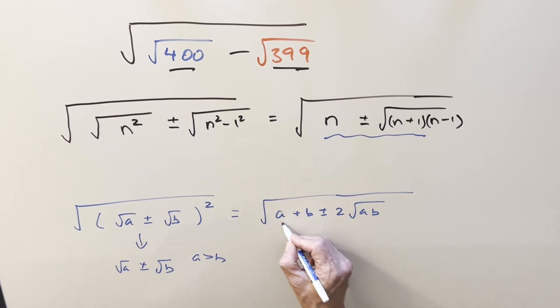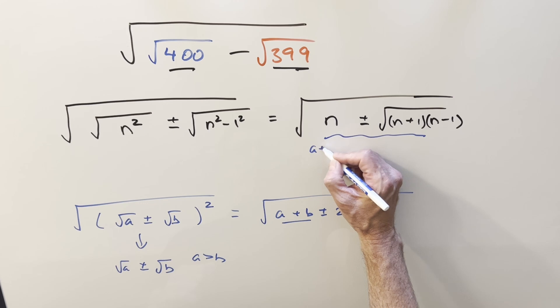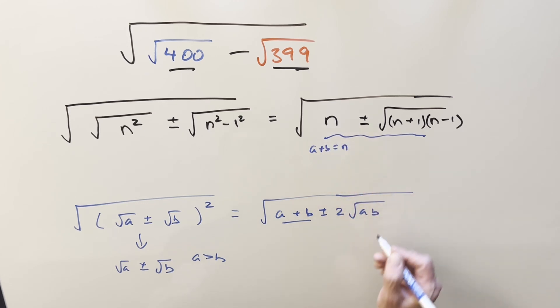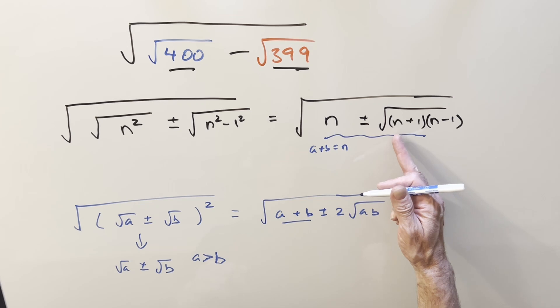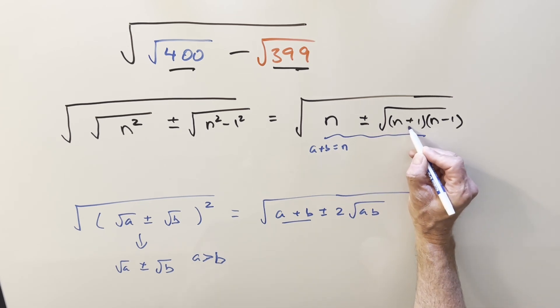So for this to work on what we have here, we want our a plus b to be equal to n. And we want this thing to be our a times b. We said we want a greater than b. Well, in this situation right here, this value is always greater than this value. So we'll set that one to a and that one to b.